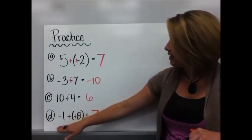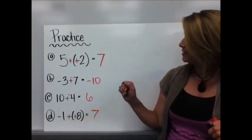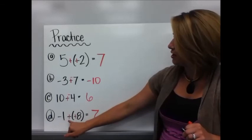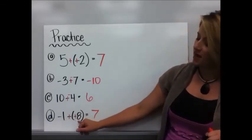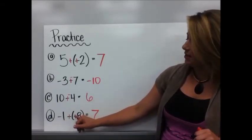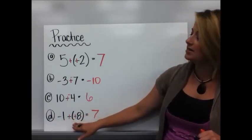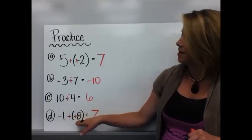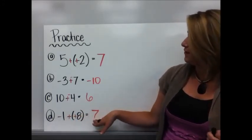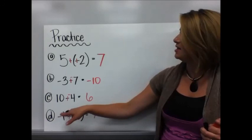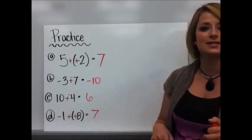And the last one, negative 1 minus negative 8. Keep negative 1, change subtraction to addition, change negative 8 to its opposite, which is a positive 8. Reread it as negative 1 plus positive 8. Different signs, negative positive, so I take the difference of those two, which is 7. And there's more positives than negatives, so my answer is 7.